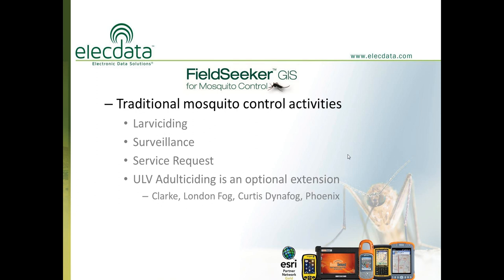FieldSeeker GIS supports traditional mosquito control activities including larviciding — larval surveillance, treatments, and identifying mosquito breeding sources — as well as surveillance activities such as trapping adult mosquitoes, collecting larval samples, and tissue samples from dead or dying birds or chicken sentinel flocks. Service request tools include geocoding calls to an address and assigning work orders to a technician. As an optional extension, we have ULV adult spraying tools to record ground-based fogging activities using equipment from Quark, Lemon Fog, Curtis Dyna Fog, and the Phoenix Fogger line from Target.